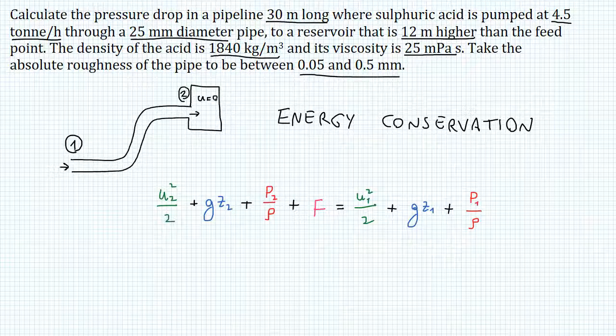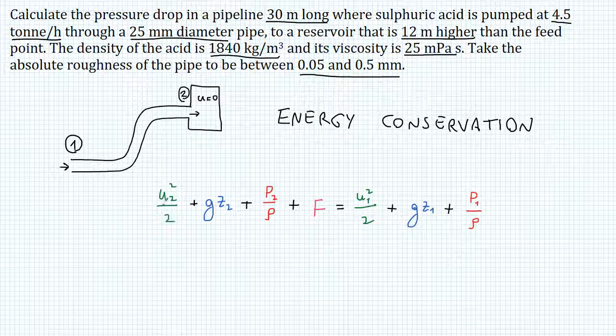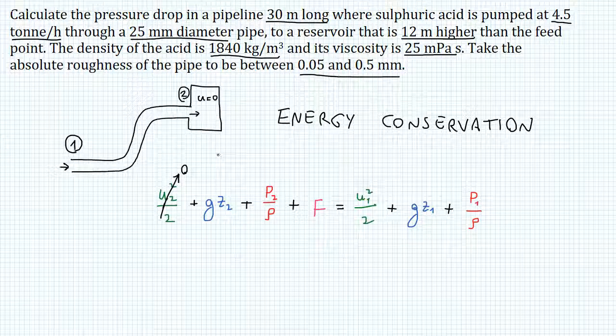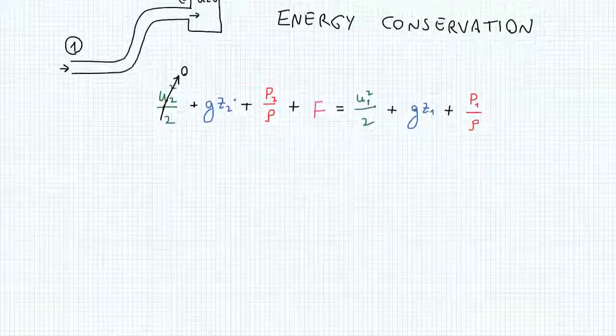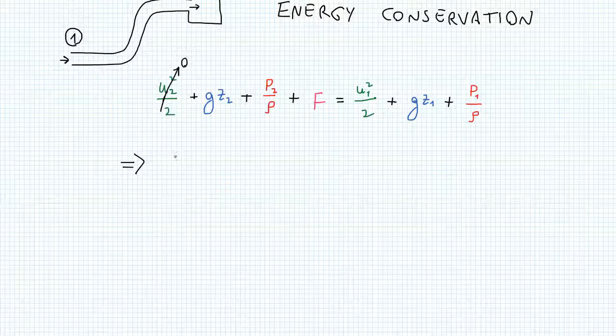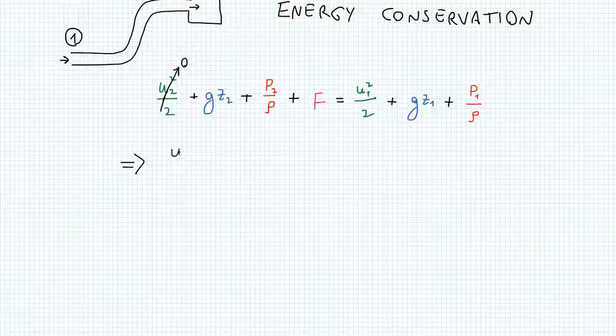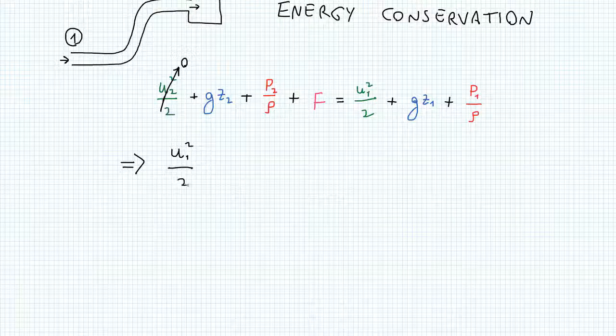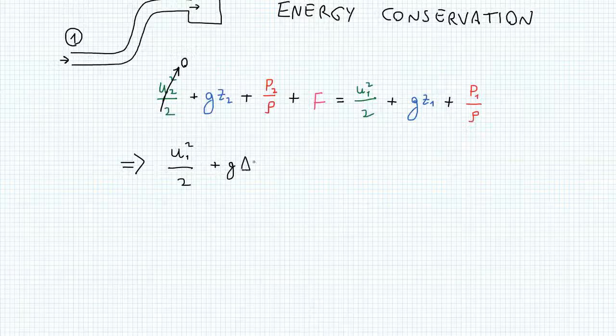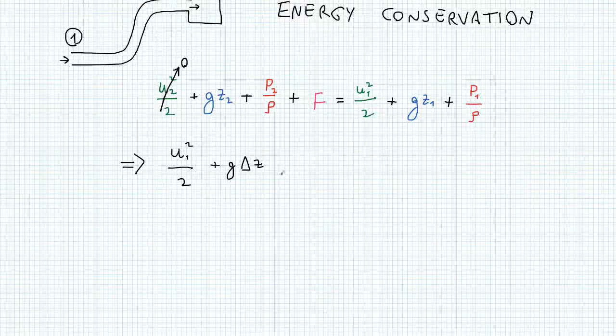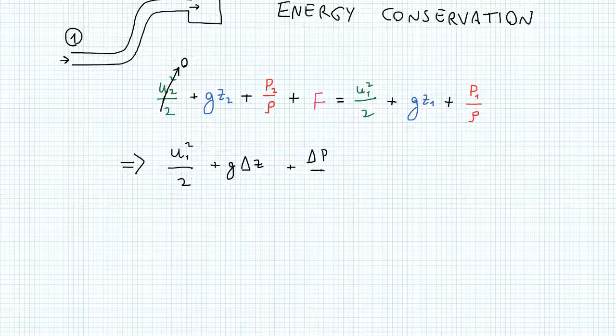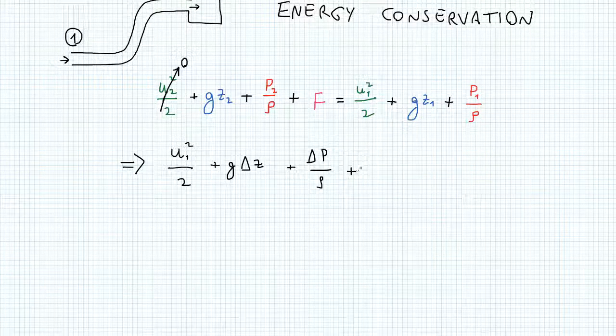Now, the velocity in the reservoir is zero, so we know that U2 is zero. So now we can rewrite this equation, knowing this, and putting all the terms on the left-hand side. So U1 squared over 2, plus G delta Z, which is the 12 meters, plus delta P over rho, where the delta P is what we're looking for, plus F equals zero.